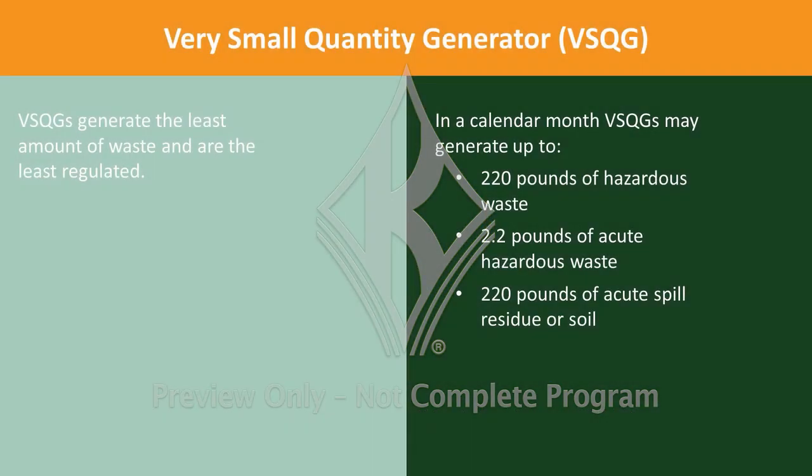Very Small Quantity Generators, or VSQGs, generate the least amount of waste and are the least regulated. In a calendar month, VSQGs may generate up to 220 pounds of hazardous waste or 2.2 pounds of acute hazardous waste.